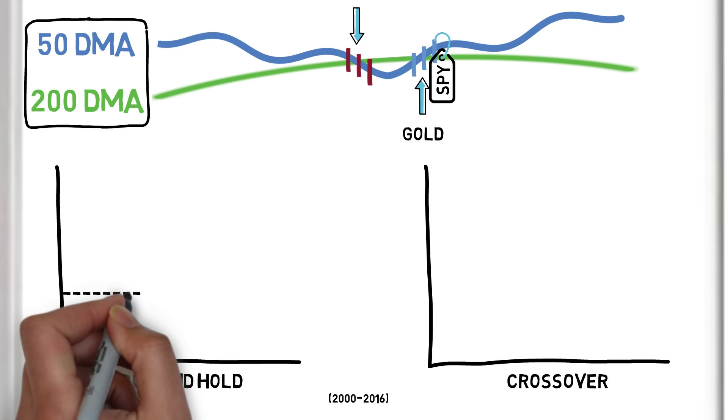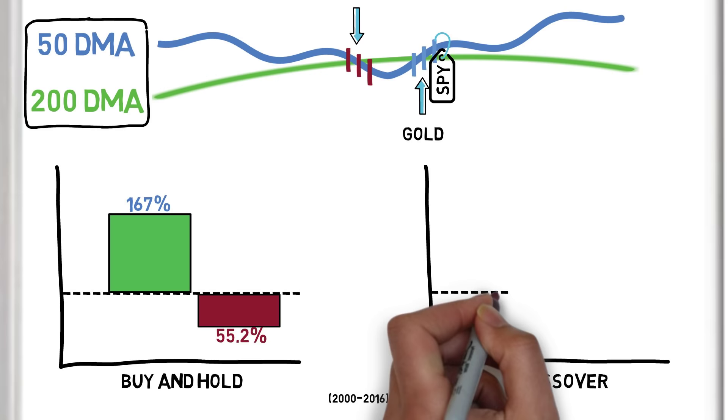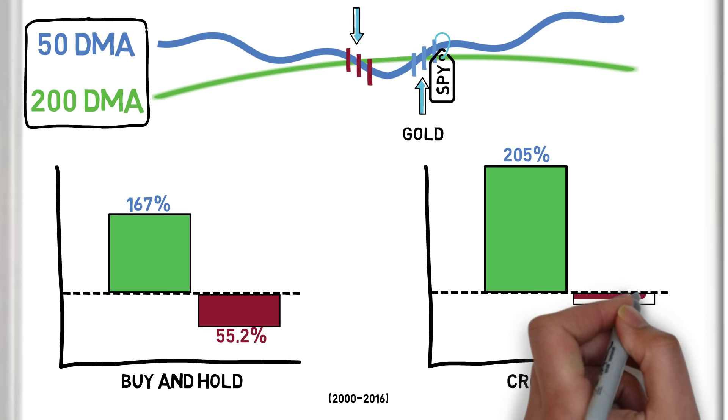From the point of the first crossover signal, buy and hold returned a gain of 167% with a maximum drawdown of 55.2%. Using the crossover system, we would have generated a 205% return, with a maximum drawdown of 19.2%, considerably less risk than buy and hold.